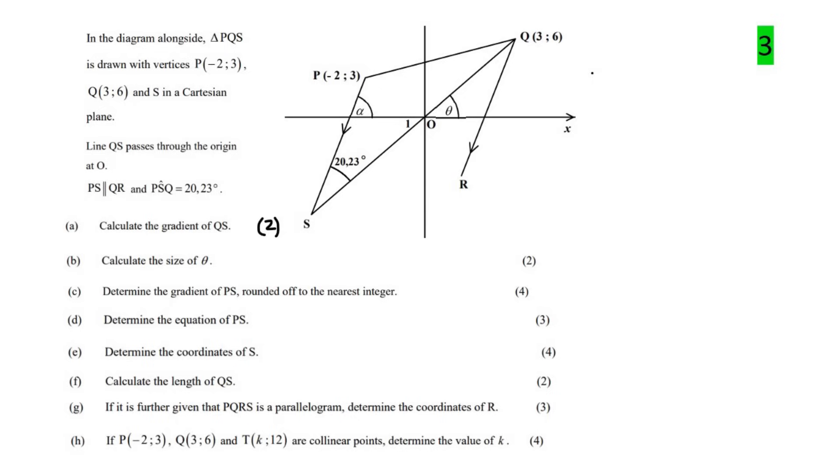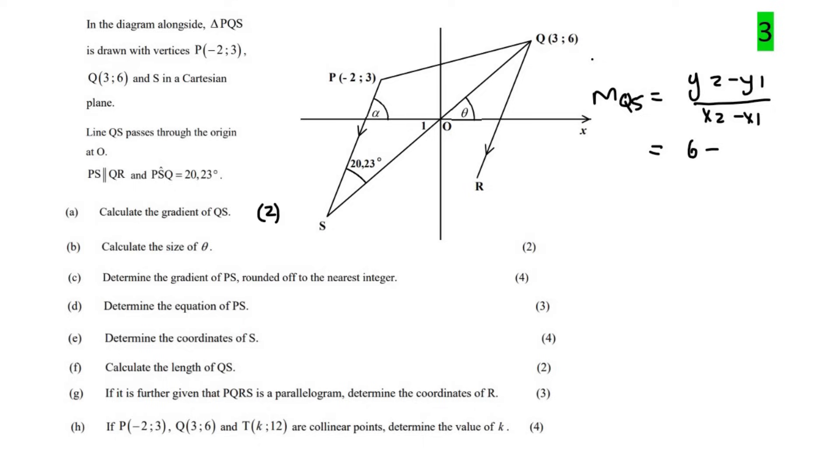We know that the gradient formula is y2 minus y1 over x2 minus x1. So the gradient of QS is going to give us 6 minus, now we don't have the point S, but what we do know is that it also goes to the origin. So the origin has coordinates of 0, 0, and then we can say 3 minus 0. If you work this out, you should get 2. So the answer for that one is going to be 2.